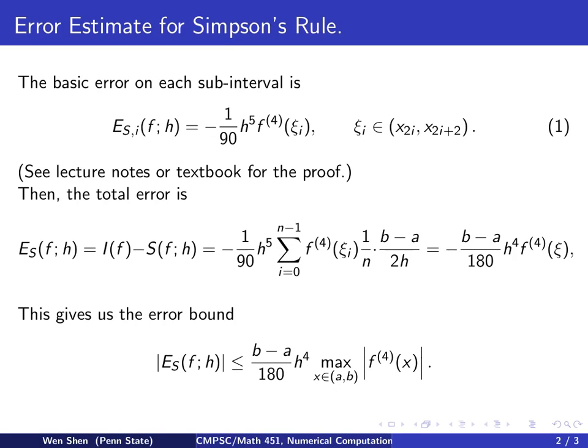And then this is the error estimate. Based on the error estimate, we can have the error bound. That is the absolute value of the error. And we want to find something that bounds it. So, since we don't really know where the ξ is, we could substitute this by the maximum value of the fourth derivative on the interval from a to b.